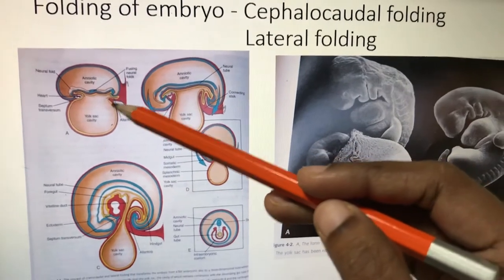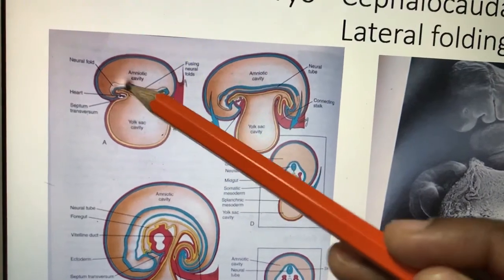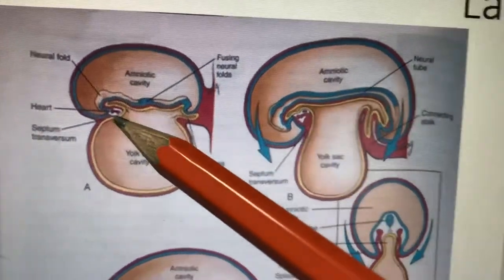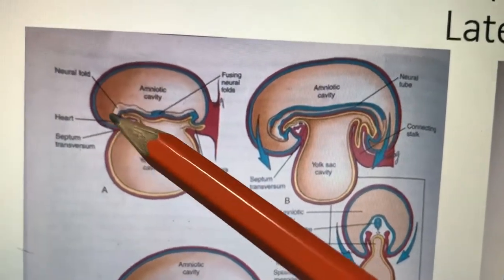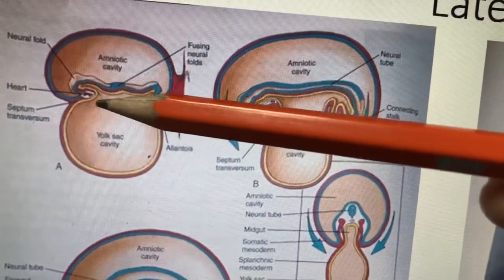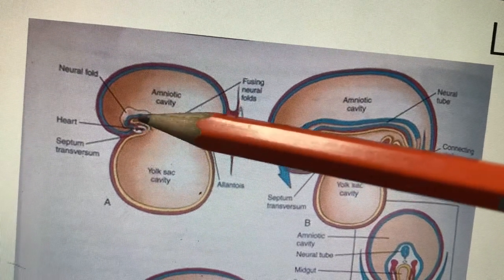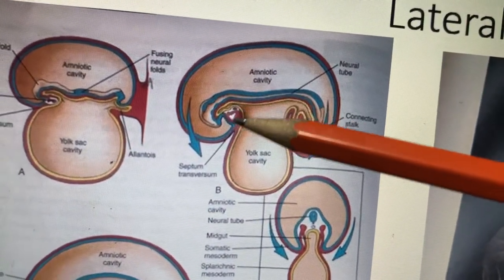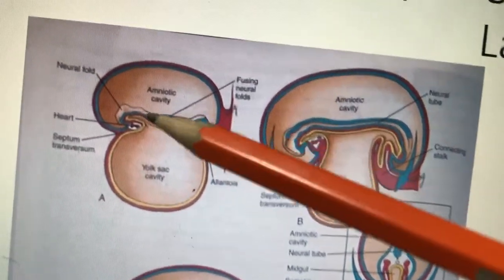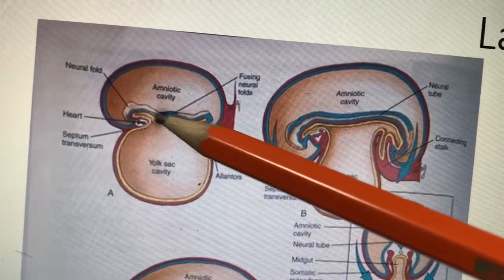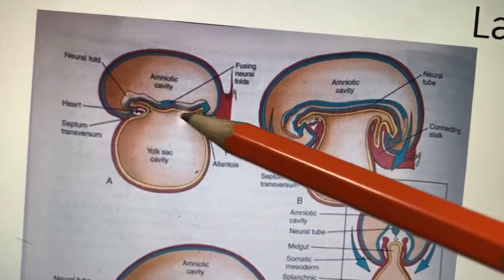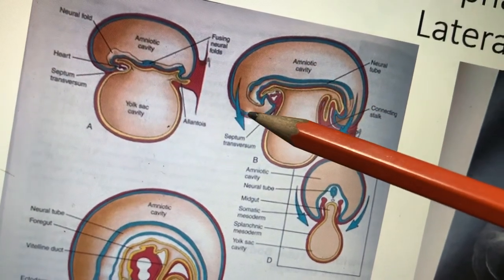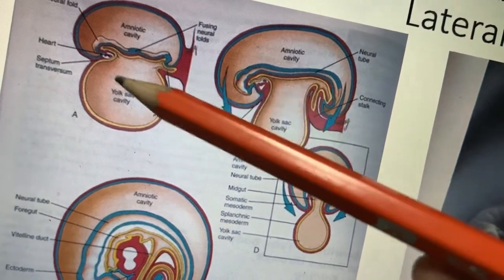Now we come to the folding of the embryo. So far the embryo is like a plate; now because of the development of the CNS, the cranial end of the embryonic disc starts folding. The septum transversum — the future diaphragm — is cranial to the heart, which is developing in the lateral plate mesoderm area. When folding starts, the head end goes down and the heart enters into the thoracic cavity.